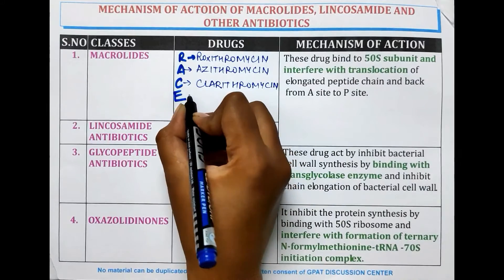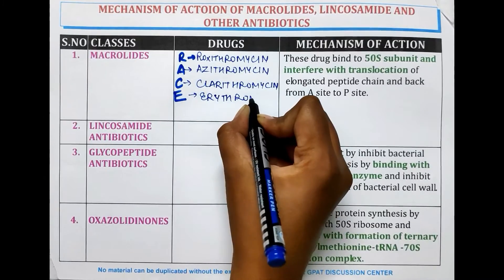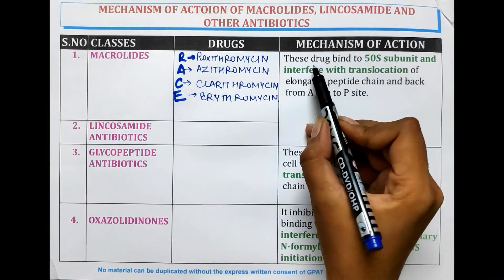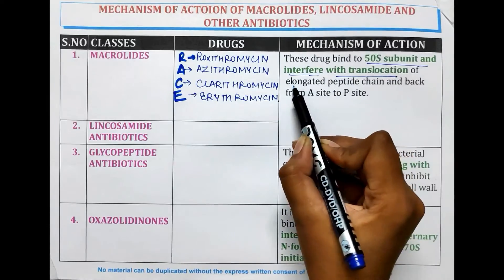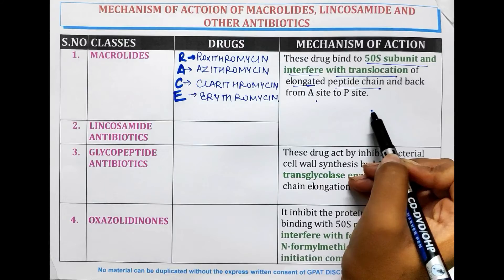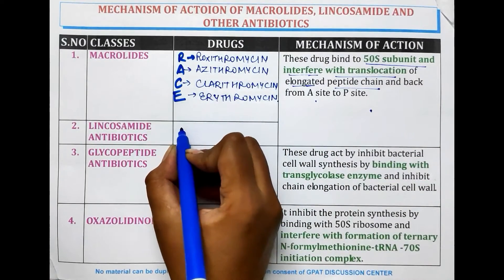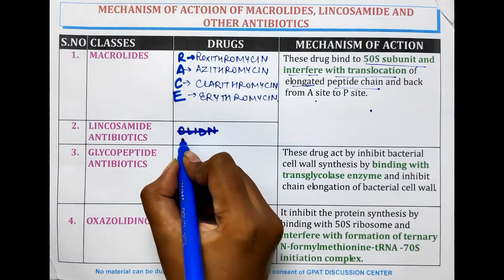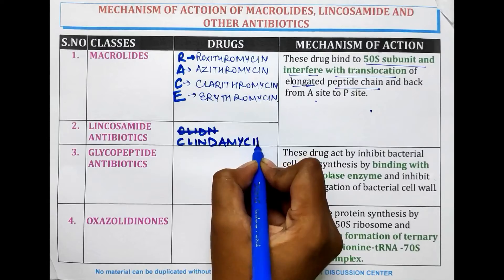E is for Erythromycin. The mechanism of action is briefly that these drugs bind to the 50S subunit and interfere with the translocation of the elongated peptide chain from the A site to the P site. Lincosamide antibiotics contain Clindamycin, and the mechanism of action of Clindamycin is the same as Macrolides, as discussed earlier.